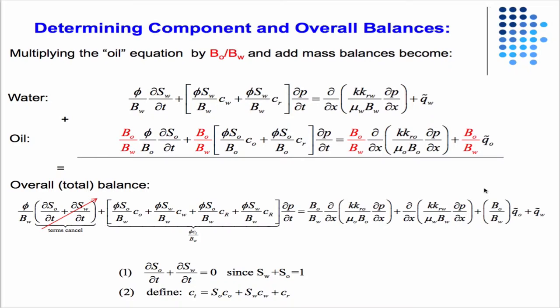We identify the total compressibility as this guy, and then we can write this more compactly as the porosity times the total compressibility over the formation volume factor of water. What we're left with is an equation that basically looks like it's in terms of pressure only - dP/dt and some functions as spatial derivatives of pressure. We call this the pressure equation, but it's not decoupled from saturation because there are saturations in the relative permeability curves.